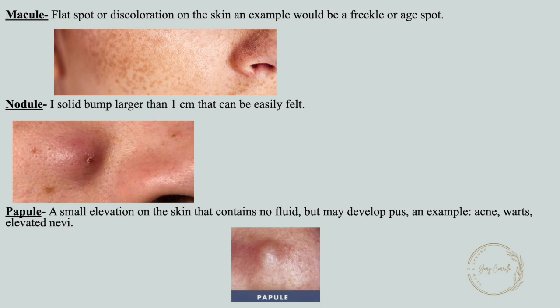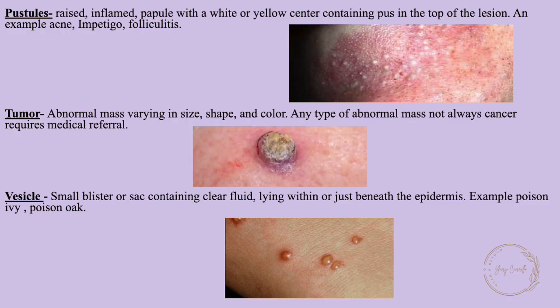A papule is a small elevation on the skin that contains no fluid but may develop pus; an example would be acne, a wart, or an elevated nevus. Pustules are raised, inflamed papules with a white or yellow center containing pus at the top of the lesion; examples include acne and folliculitis. A tumor is an abnormal mass varying in size, shape, and color — not always cancer — and requires medical referral.